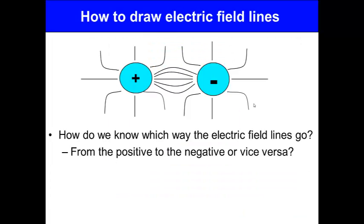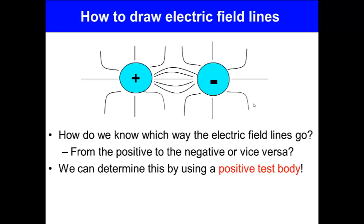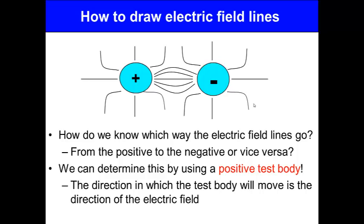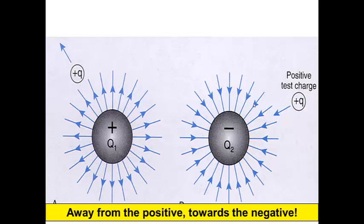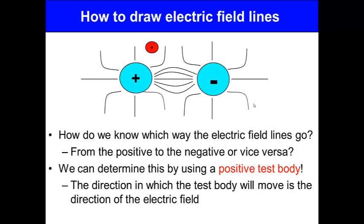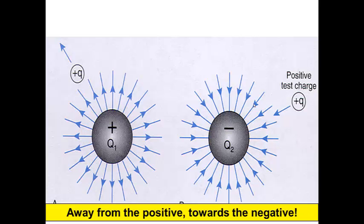How do we know which way the electric field lines go, from positive to negative, or vice versa? How can we determine this by using, we can determine this by using a positive body test. The direction in which the test body will move is the direction of the electrical field. So here you have a positive test body, and it will move towards the negative pole, so it will move towards the negative. Away from the positive towards the negative is the way that these electrical field lines will move.